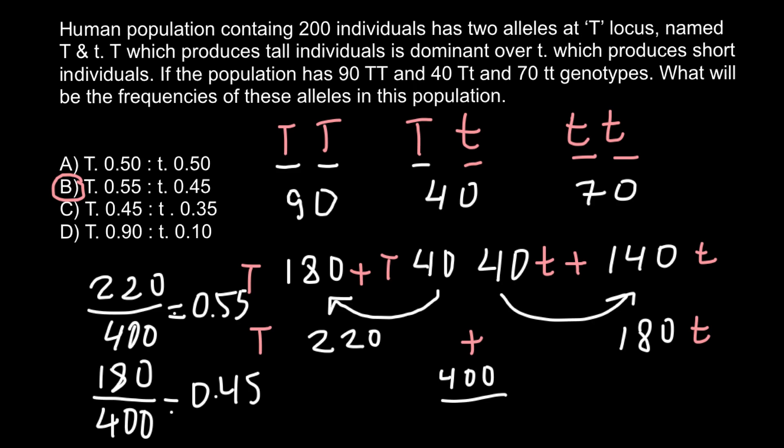So I have shown here the long way how to solve this problem just for you to understand the logic. But actually there is even a shortcut in order to solve this problem. Because we are asked the frequency of alleles, we shouldn't multiply these numbers by 2.